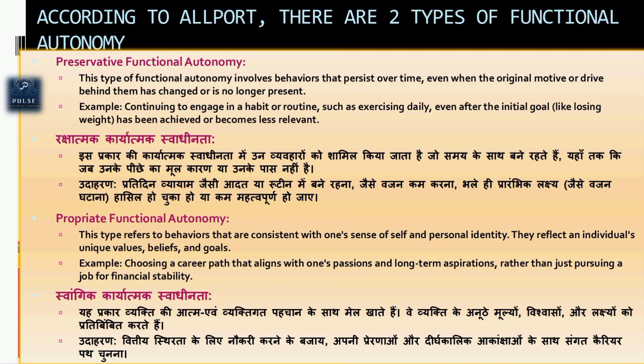Types of Functional Autonomy According to Allport. 1. Preservative Functional Autonomy: This type involves behaviors that persist over time, even when the original motive or drive behind them has changed and is no longer present. For example, continuing to engage in a habit or routine such as exercising daily, even after the initial goal like losing weight has been achieved and becomes less relevant.